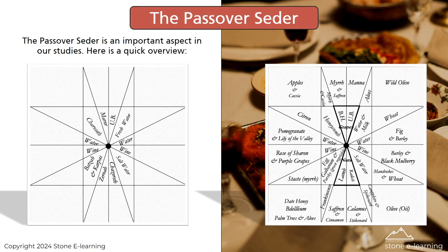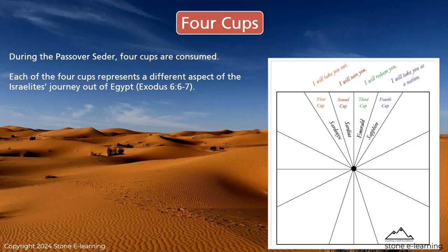The Passover Seder is an important aspect in our studies. Here is a quick overview. During the Passover Seder, four cups are consumed. Each of the four cups represents a different aspect of the Israelites' journey out of Egypt, Exodus 6, verses 6–7.